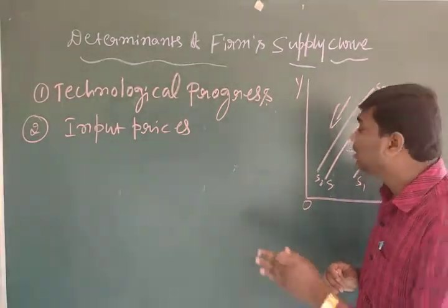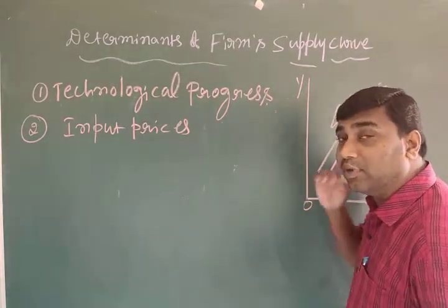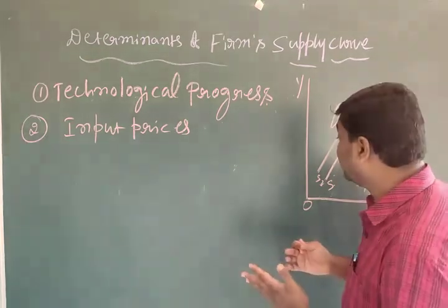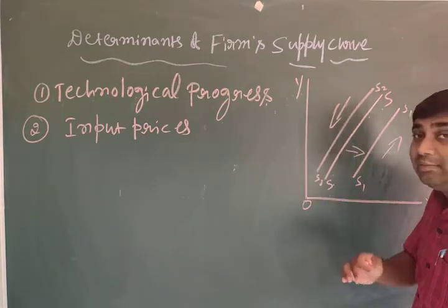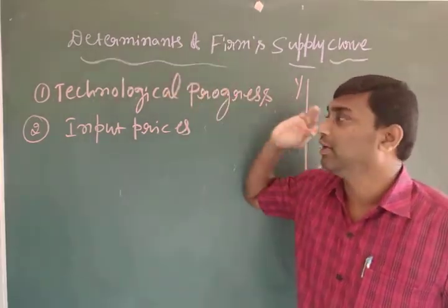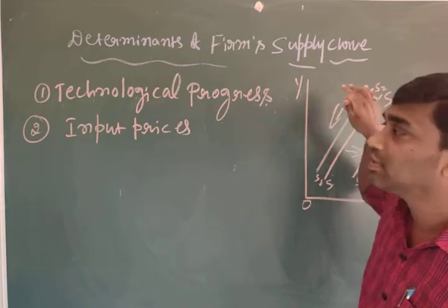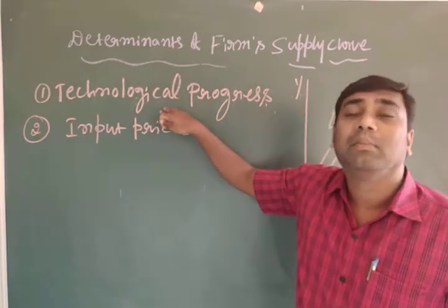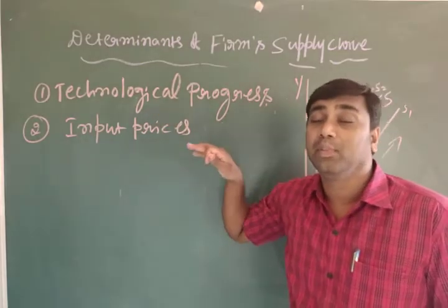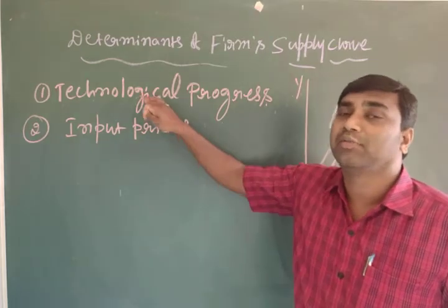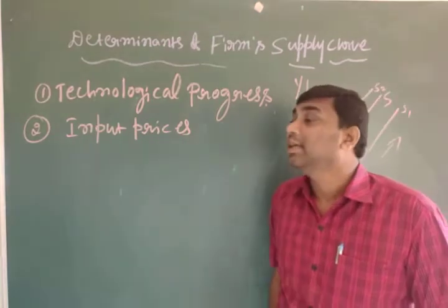If technological progress is good, the supply curve will shift rightward. If technological progress is not good, the supply will shift leftward — meaning supply will be less. When we use modernized tools in production, the supply curve will shift rightward. Technological progress is a very important determinant that increases or decreases supply.